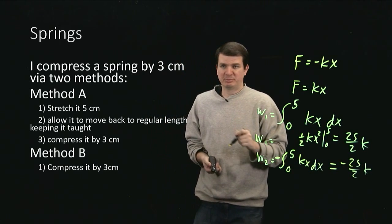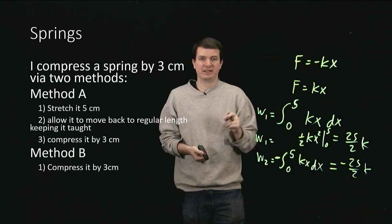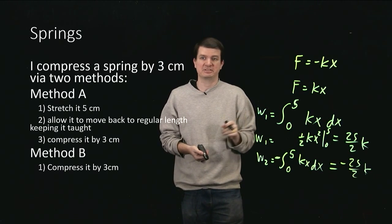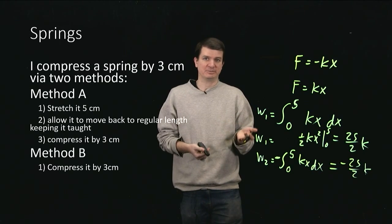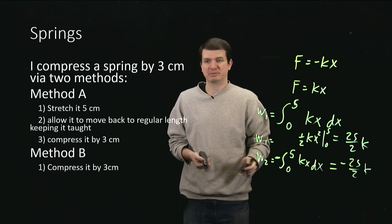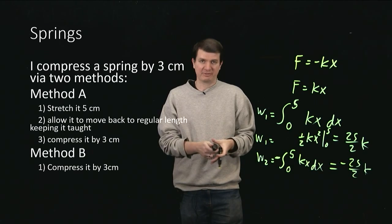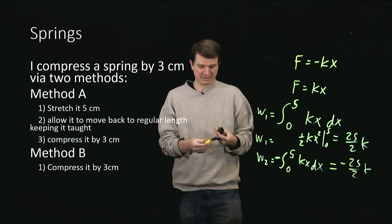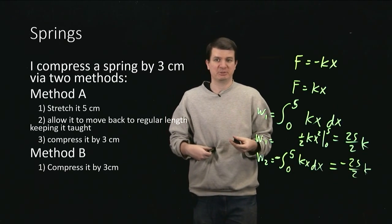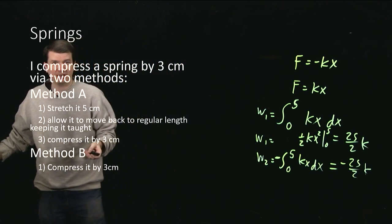So I realize that parts 1 and 2 cancel off with each other. So the work done after I've gotten back and finished step 2 is actually 0 at this point. And then I'm left with the step of compressing it by 3 centimeters, and that's exactly the same thing I do in step B, which means that in fact this method is irrelevant. It did not care that I first stretched the spring by any amount. It doesn't matter that I chose 5, in fact.